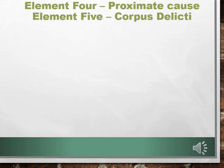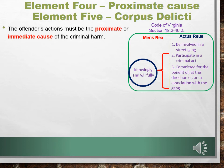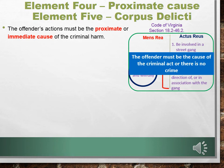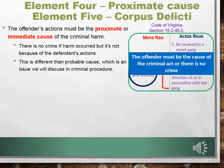There are two more elements that need to be satisfied before we can find someone guilty of committing a crime. With our mens rea, actus reus, and concurrence established, it's time to talk about element four: proximate cause. The offender's actions must be the proximate, or immediate, cause of the criminal harm. The offender must be the cause of the criminal act, or there is no crime. There is no crime if harm occurred but it was not because of the defendant's actions — if the defendant didn't actually cause the crime to occur, the defendant is not liable. Note that proximate cause is different from probable cause, which is an issue we will discuss in criminal procedure.